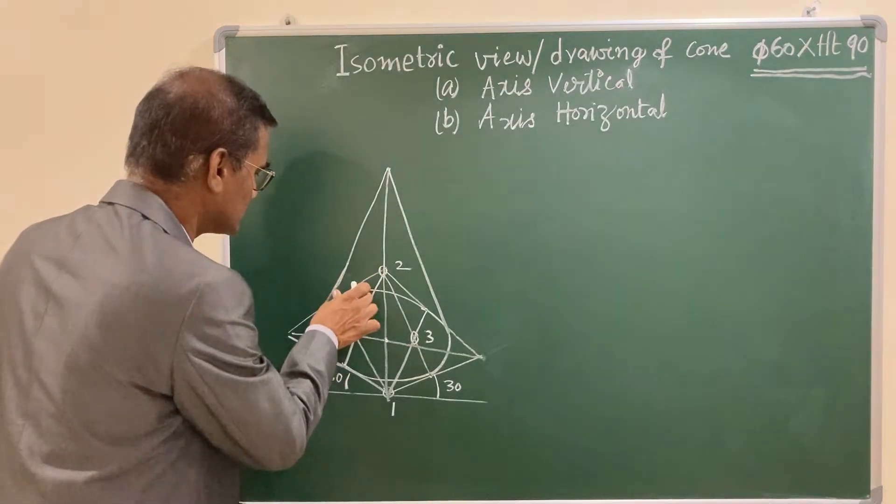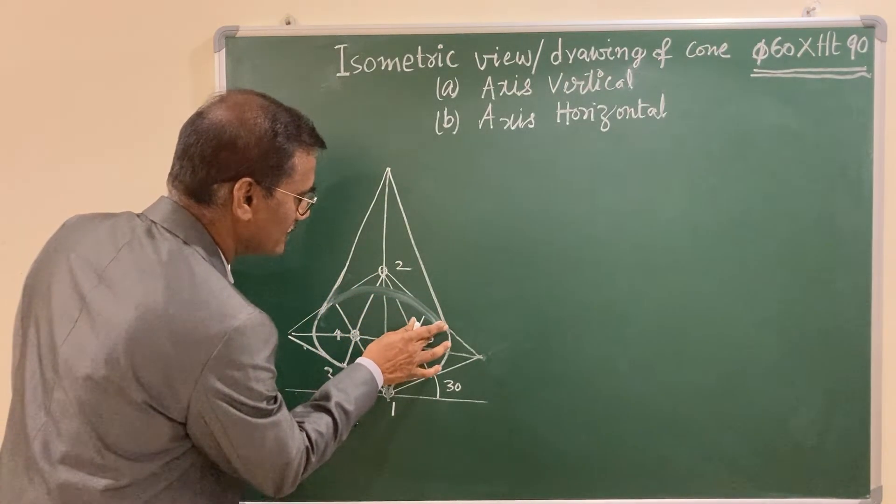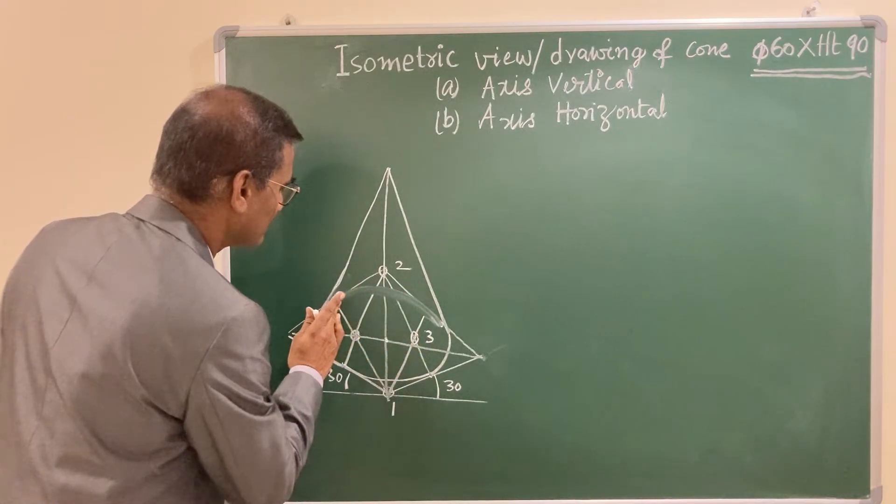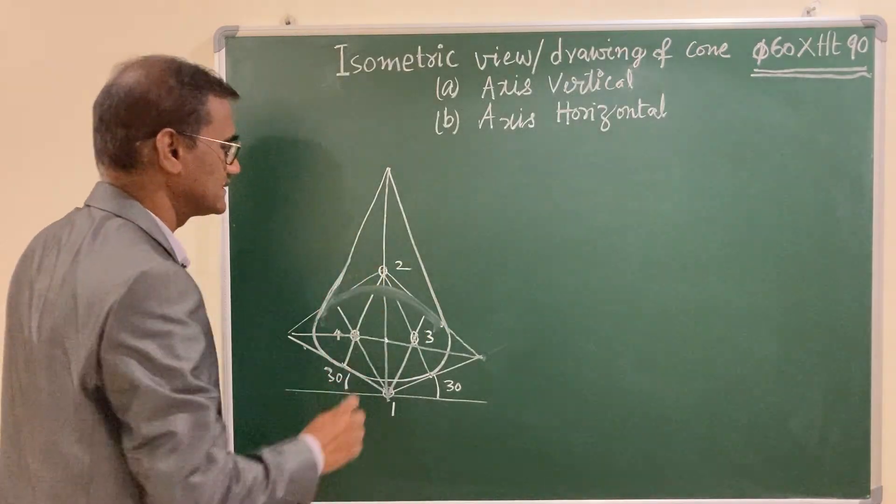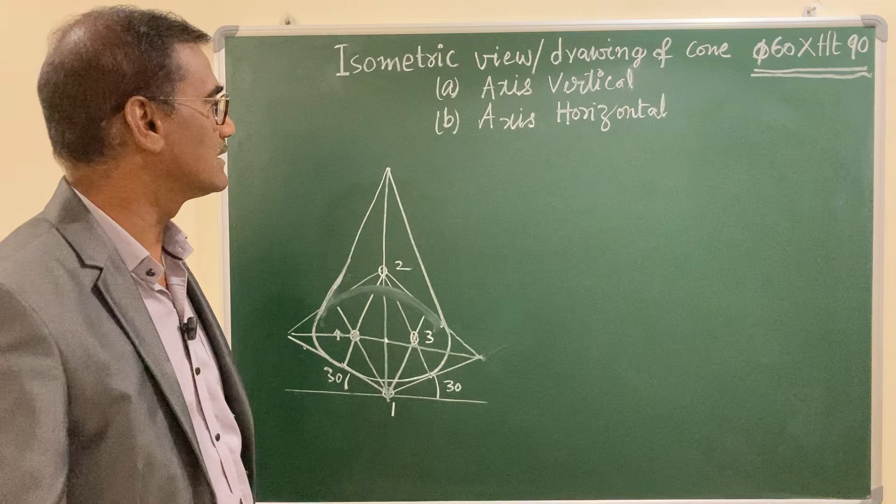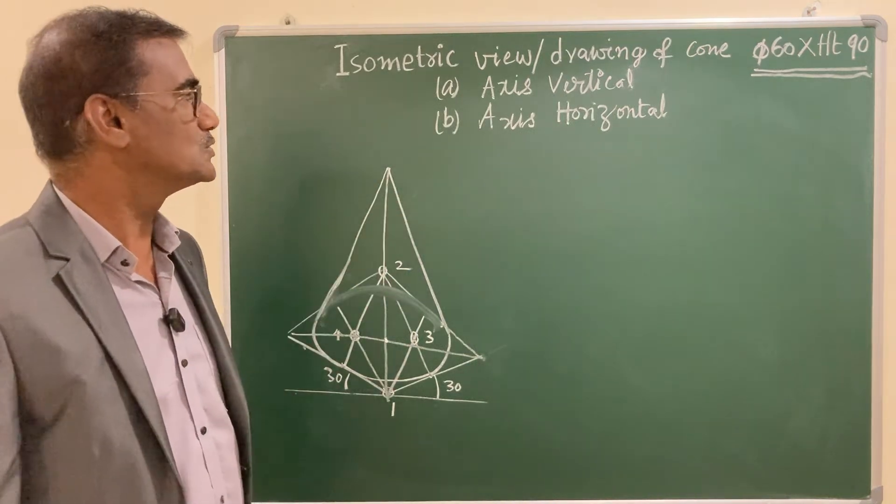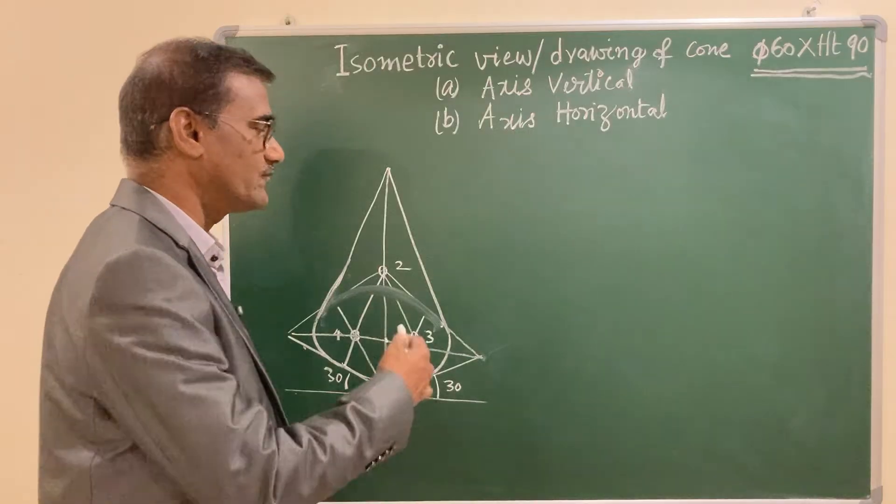And obviously, as you know, this becomes hidden. In isometric drawing, it is preferable to avoid the hidden edges, and you have avoided that. This is the first one, keeping axis vertical. Now let us proceed to keep that axis horizontal. For that, let us draw the front view.